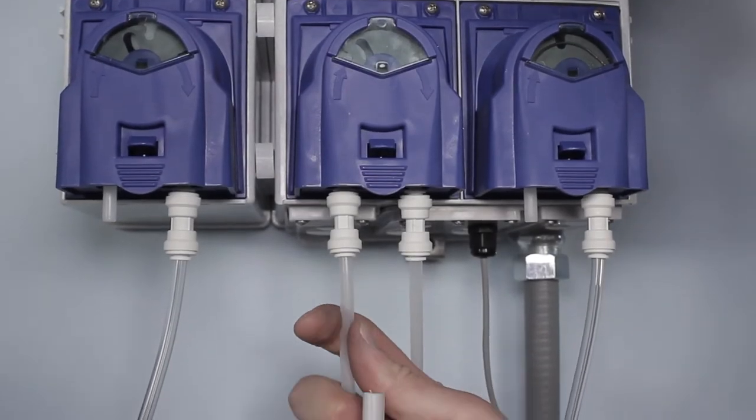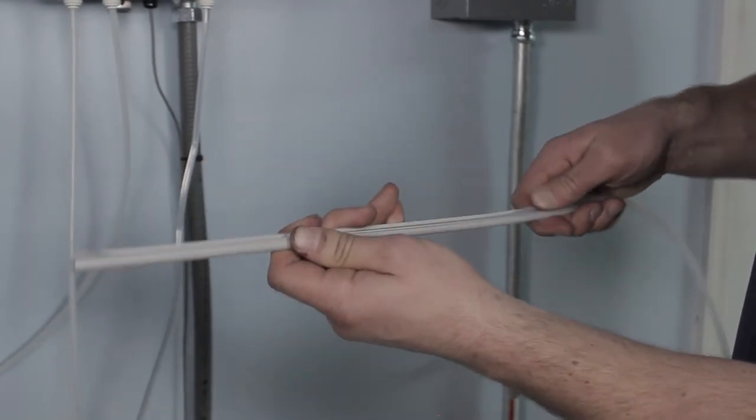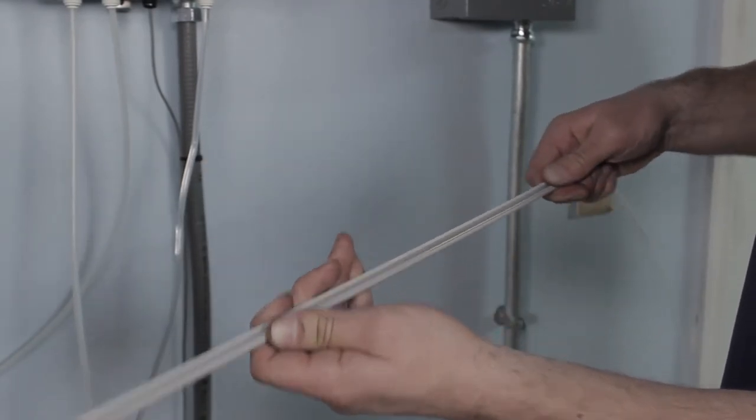Next, connect the chemical supply lines to the input of the pump and install the pickup tube that goes into the chemical container. Then go ahead and repeat for each pump.